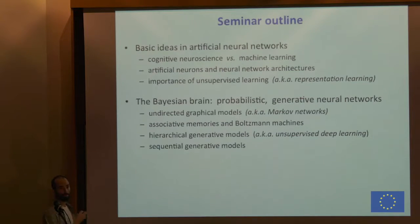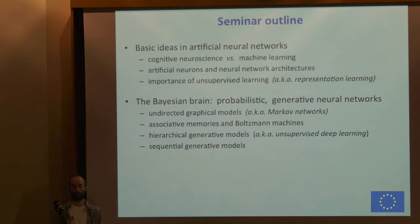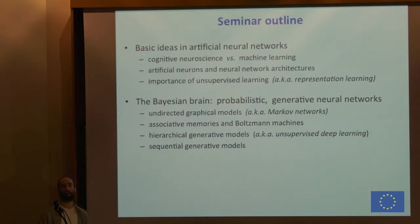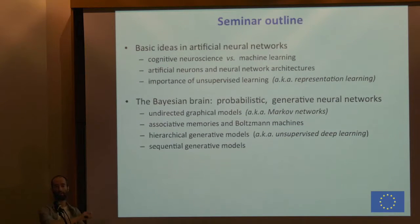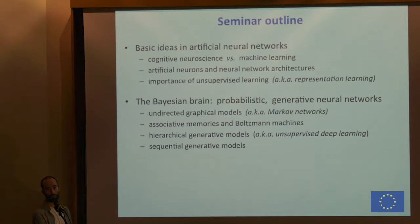I will then go into the theoretical and technical details. First, from a cognitive and neurocognitive perspective, I will introduce the Bayesian brain hypothesis — the hypothesis that the brain is always actively interpreting its environment by creating probabilistic hypotheses. I will then go into some theory of undirected graphical models, also known as Markov networks — the brothers of Bayesian networks you've been hearing about. I will then discuss how we can use Markov networks to model associative memory processes, in particular using neural networks called Boltzmann machines.